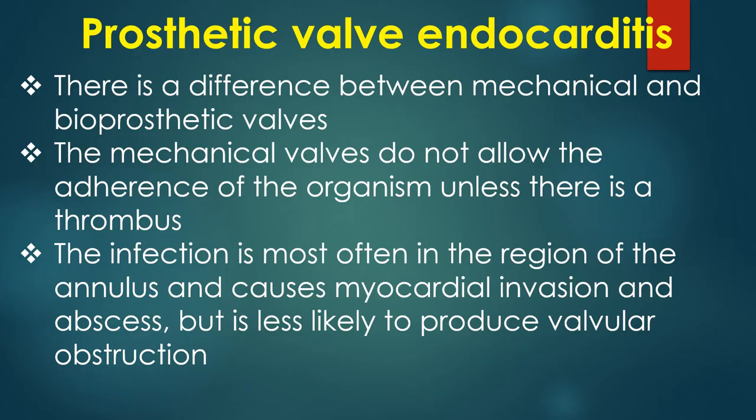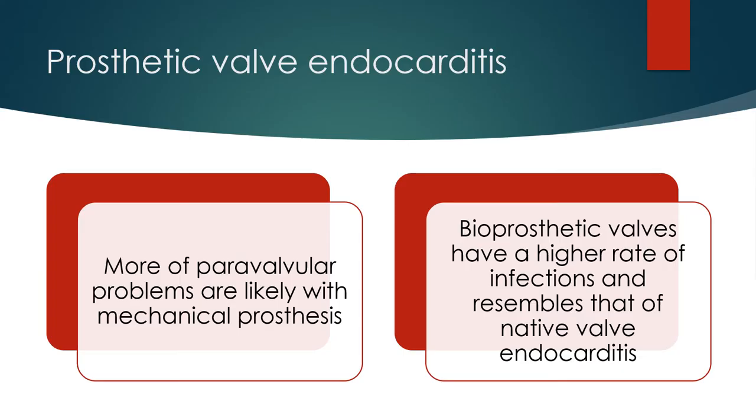There is a difference between mechanical and bioprosthetic valves. The mechanical valves do not allow the adherence of the organism unless there is a thrombus. The infection is most often in the region of the annulus and causes myocardial invasion and abscess, but is less likely to produce valvular obstruction. More paravalvular problems are likely with mechanical prosthesis.